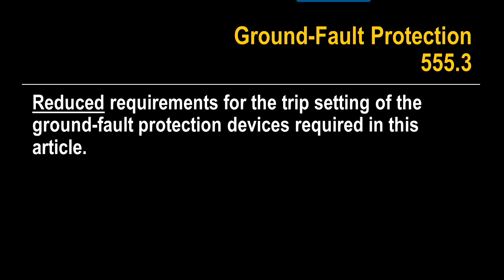We need to reduce the requirements for the trip settings of the ground fault protection device required in this section. The value of the ground fault setting was changed from 100 to 30 milliamps, but this also created a problem — they removed a provision in the analysis.